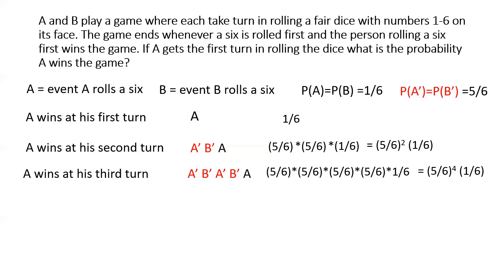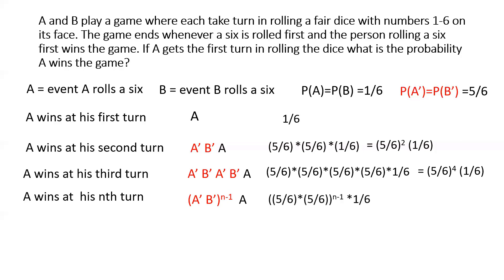To generalize: what is the probability that A wins at his nth turn? For the previous n−1 turns, both A and B must not roll a 6, represented by (A complement × B complement)^(n−1). Then event A occurs at A's nth turn. So the probability is (5/6)^(2(n−1)) × 1/6.